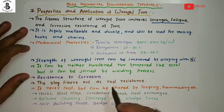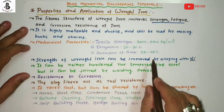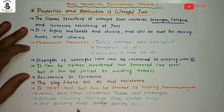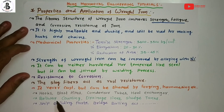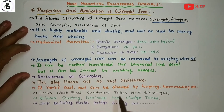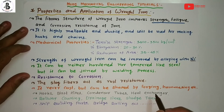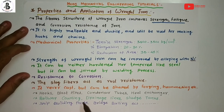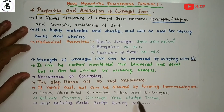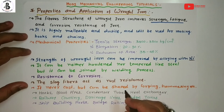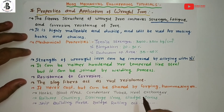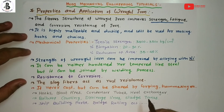Due to its mechanical properties, wrought iron has many applications, including: making hooks, blast pipes, condenser tubes, heat exchangers, railway couplings, drainage lines, sludge tanks, ship building parts, bridge railing, and many more. Wrought iron is also used as a raw material in various applications.